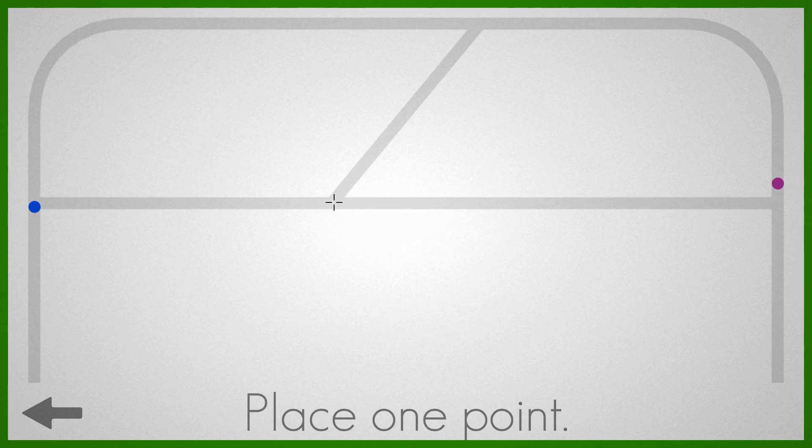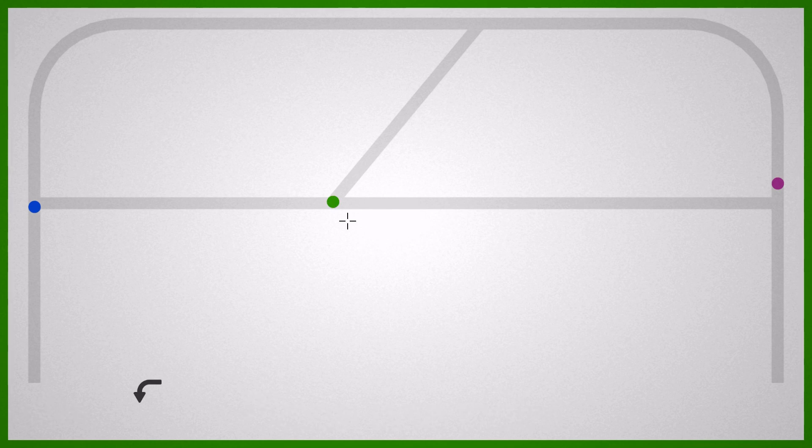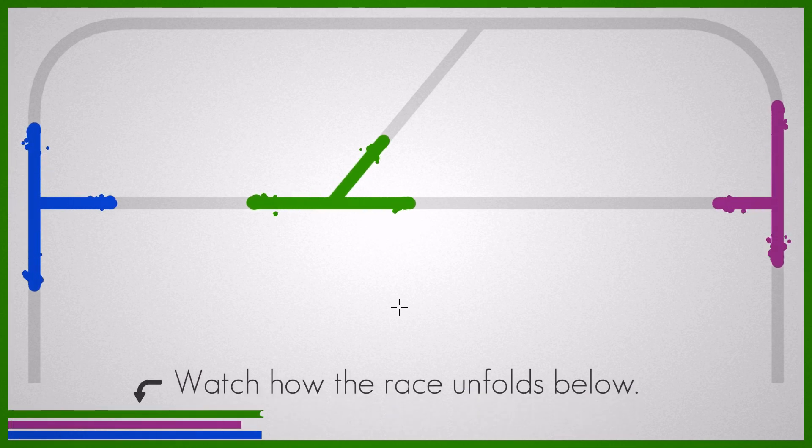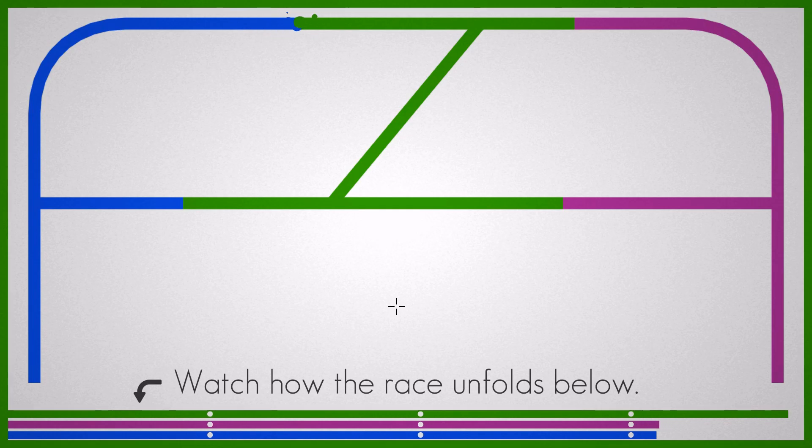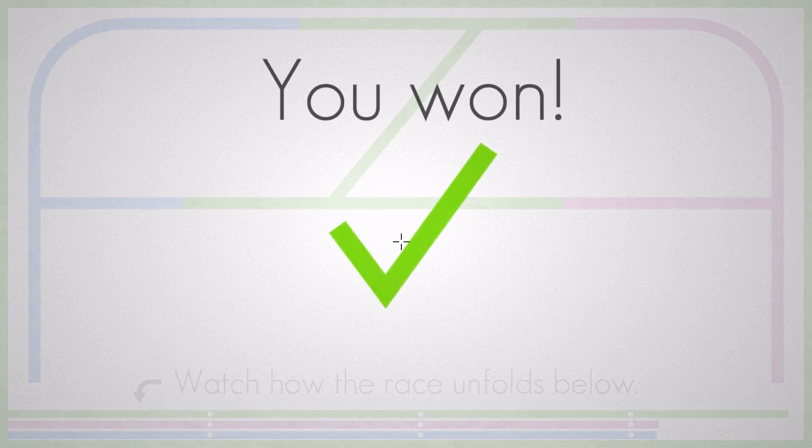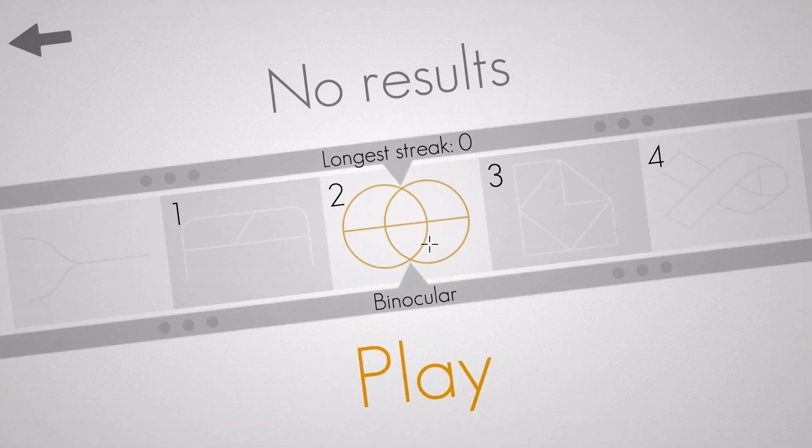And all you have to do is click on where you think would be the best place to start. Fence. Place one point. Well, probably about here to spread the quickest. Watch how the race unfolded below. Yeah, that's right. Who the line, man. I the line, man.